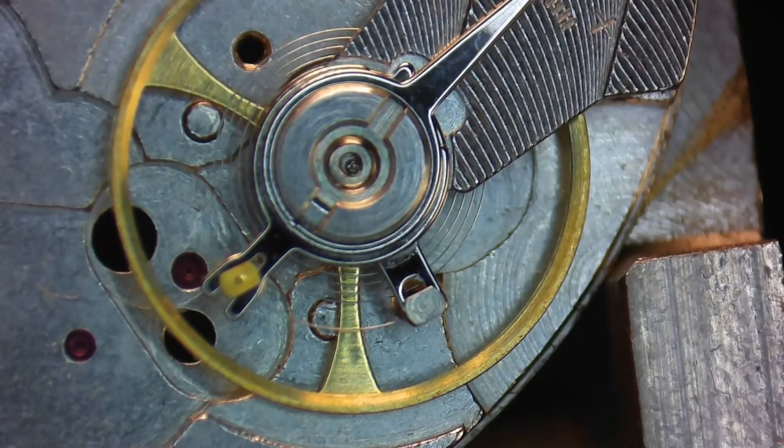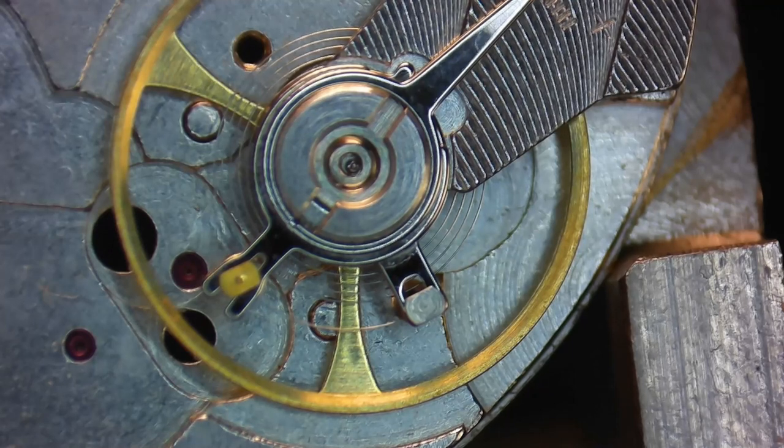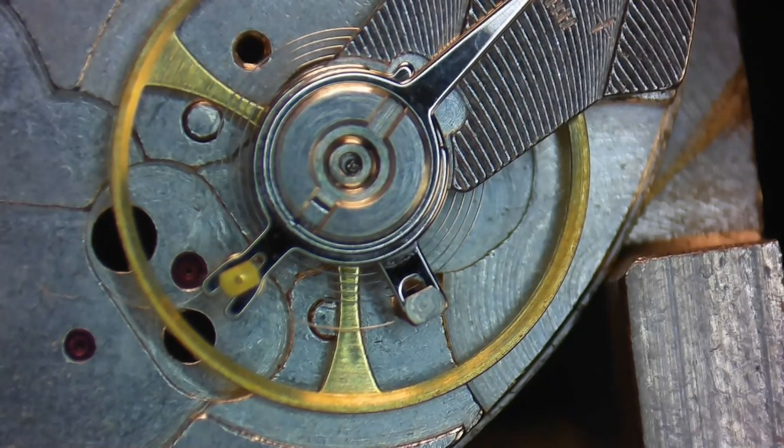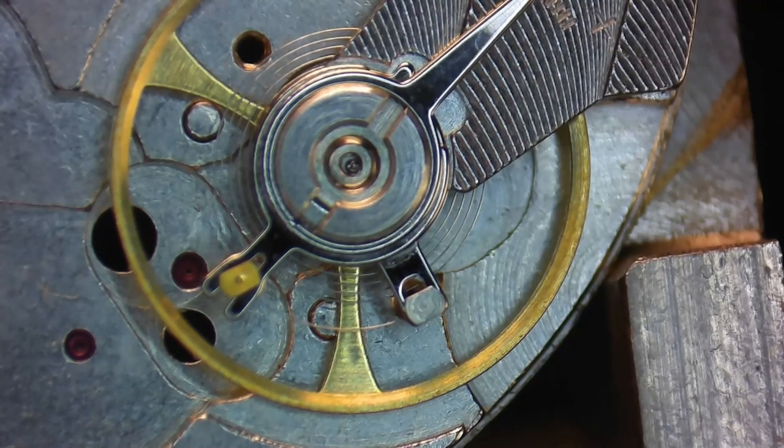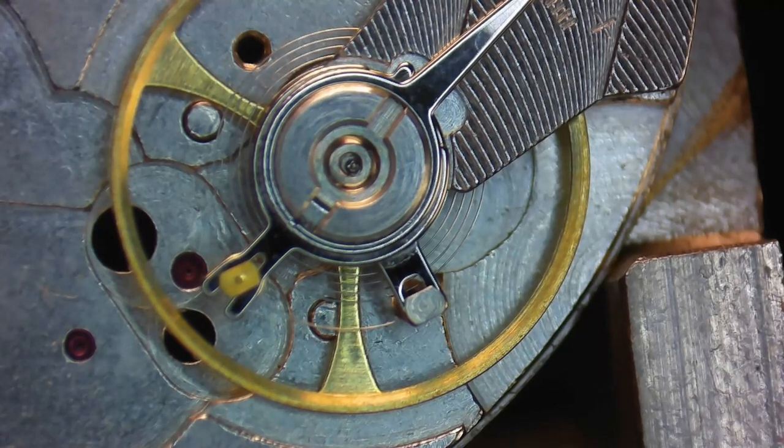Now there's a bunch of different shock systems that are made, like the KIF and Seiko's Diashock, but once you understand how they work you'll be able to service any of them. Now although it would be unusual to find a shock system that's broken, the main issue that you run into is either losing the end stone or breaking the retaining spring.